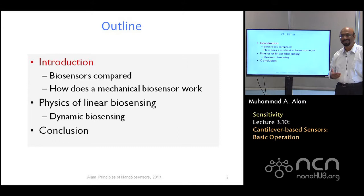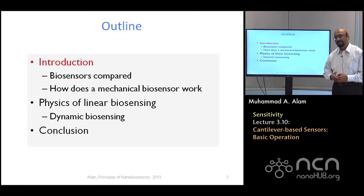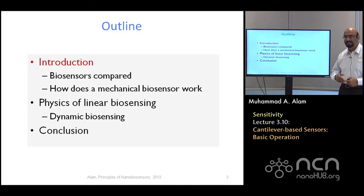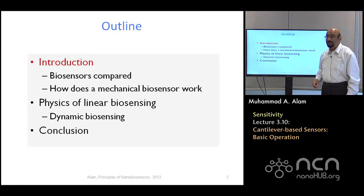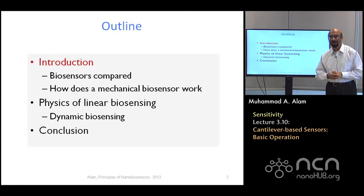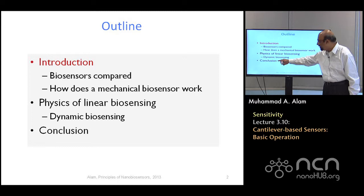I'll begin with a basic introduction on how this particular sensor compares with the two previous types of sensors we have talked about. Then I'll explain briefly how the sensor actually works, but this will be a qualitative discussion. The real quantitative discussion would be on the physics of linear biosensing. I'll explain the theoretical framework which uses this in order to measure the mass of biomolecules. Today we'll focus on dynamic biosensing — using oscillation of a cantilever beam to measure the mass. In the next lecture, we'll talk about static deflection.